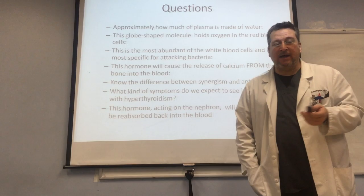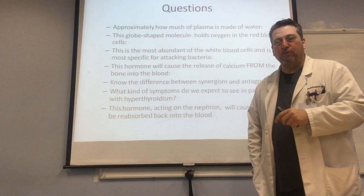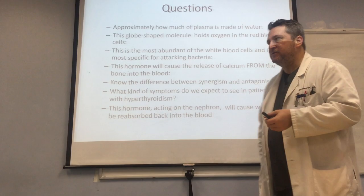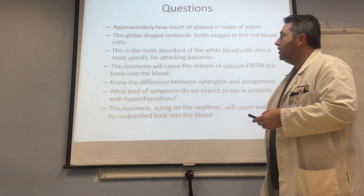Approximately how much of plasma is actually made up of water? Remember, some books will say between 90 and 92%, so just split the difference. In that red blood cell, there is a globe-shaped molecule that actually holds the oxygen — this is the seat on the bus, the thing that actually carries the oxygen. It is the most abundant molecule in the red blood cell and acts as a buffer in that cell as well.